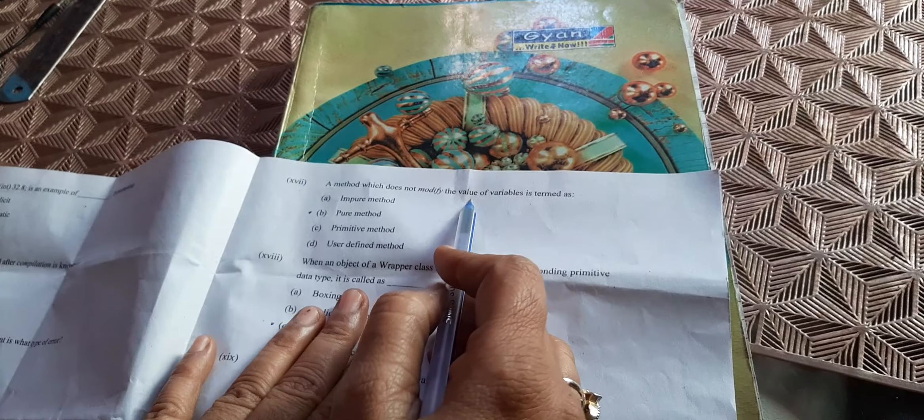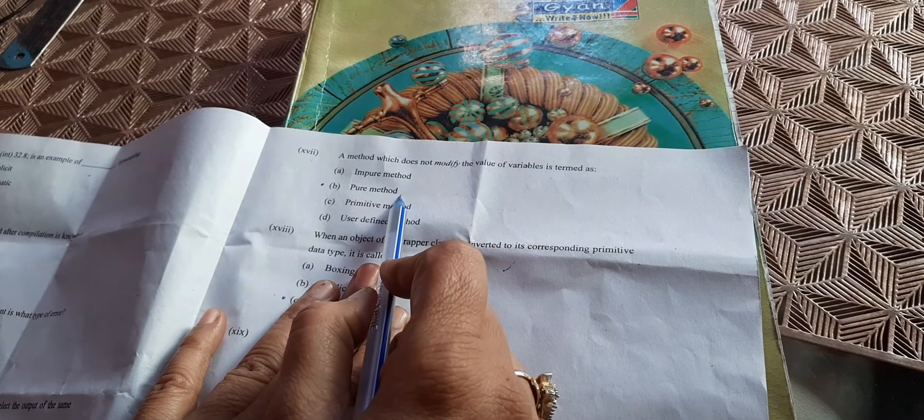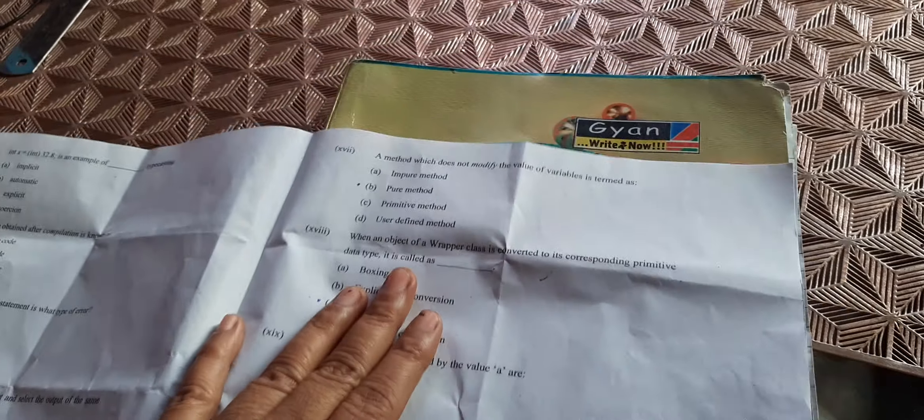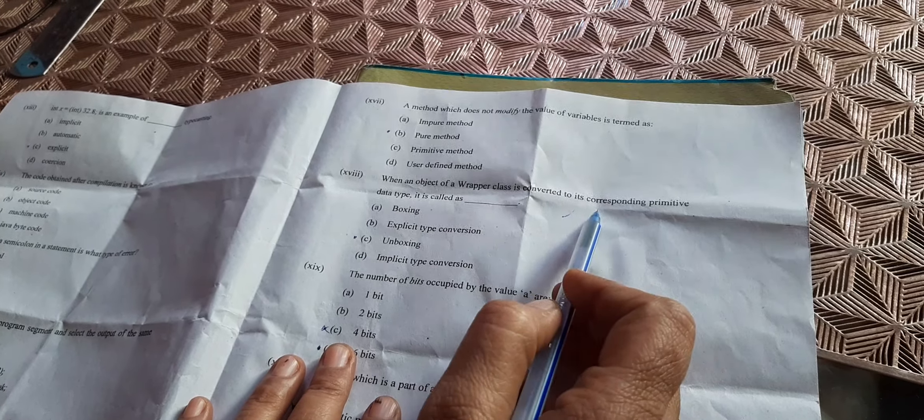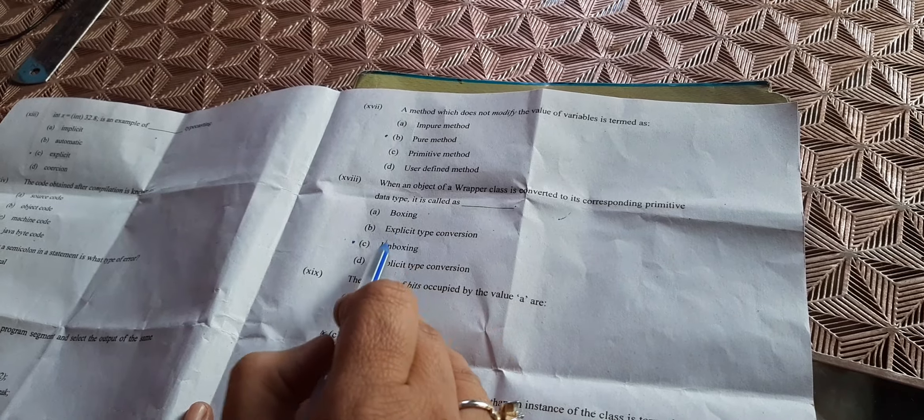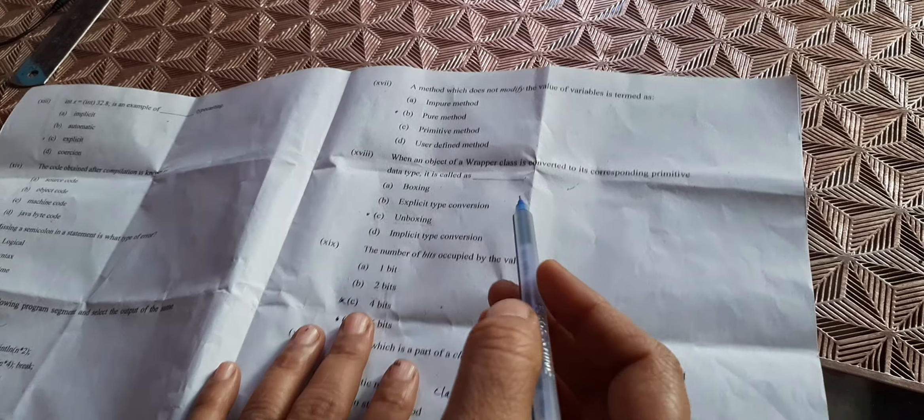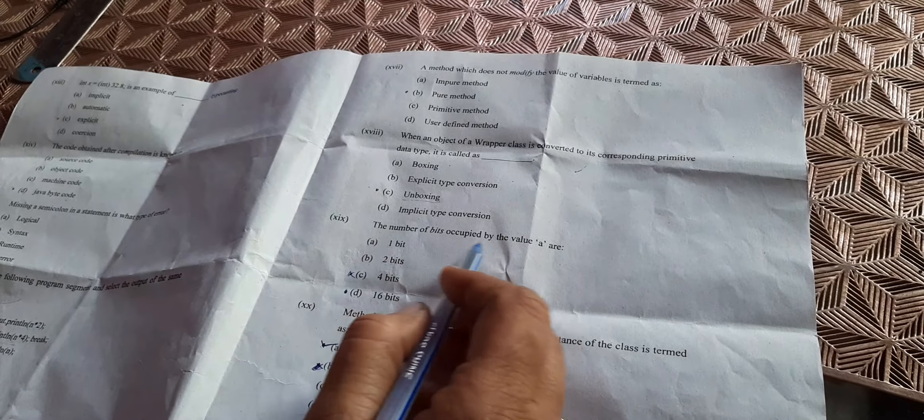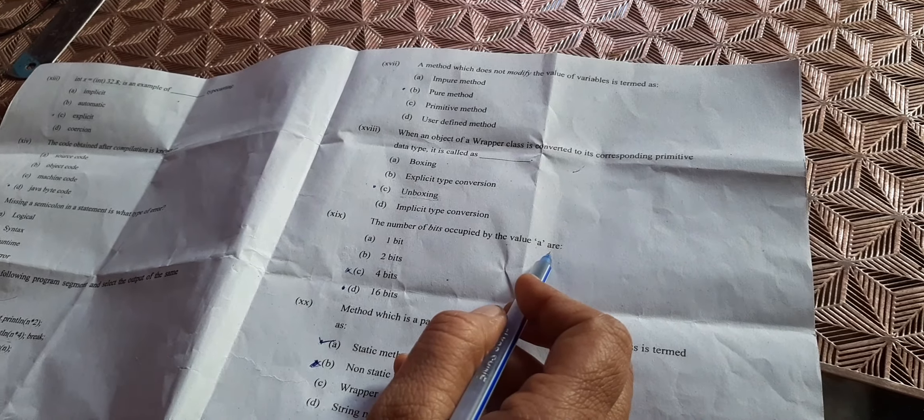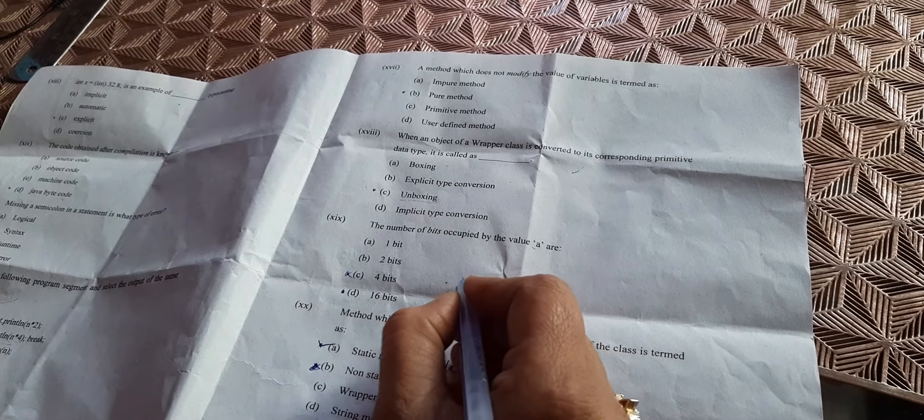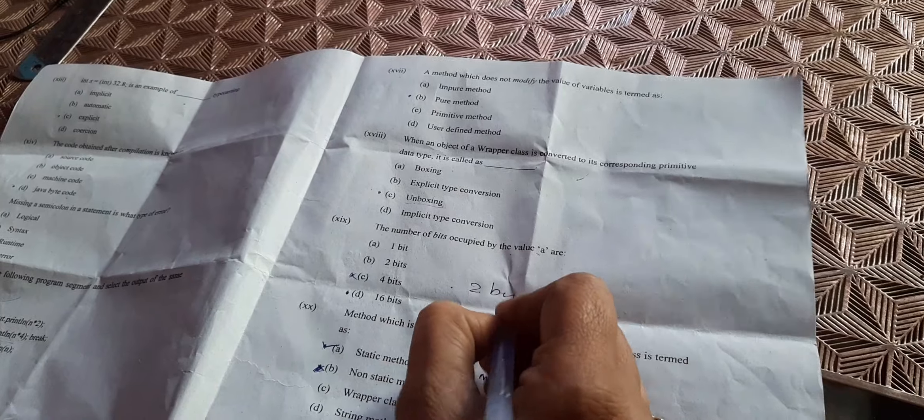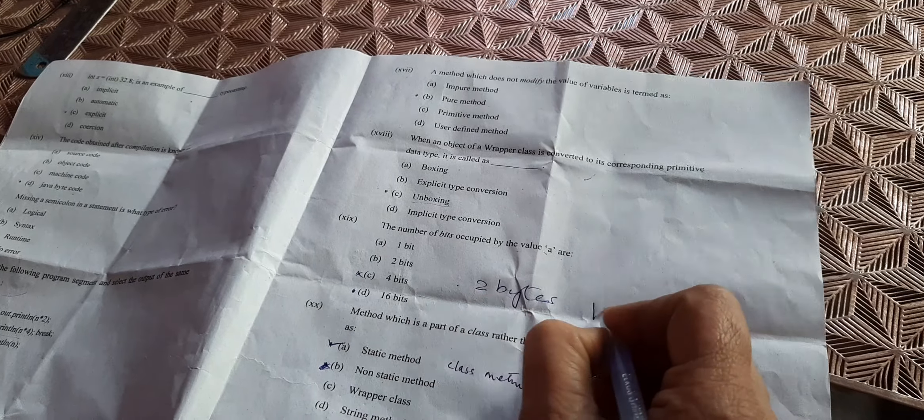A method which does not modify is known as a pure method. When an object of a wrapper class is converted into corresponding primitive data type, it is called unboxing. The number of bits occupied by value a - a is a character type, and character type uses two bytes, and one byte is 8 bits, so it will be 16 bits.